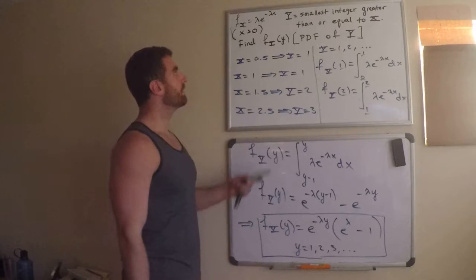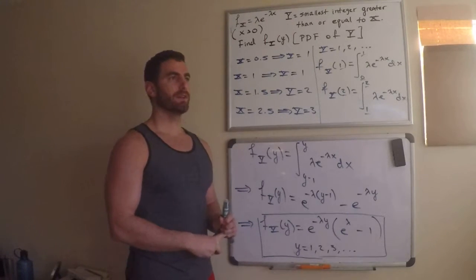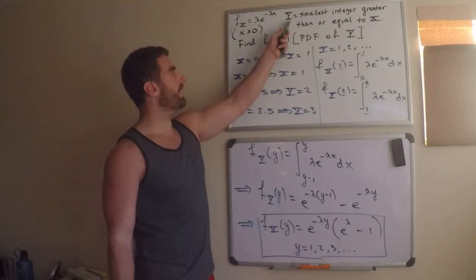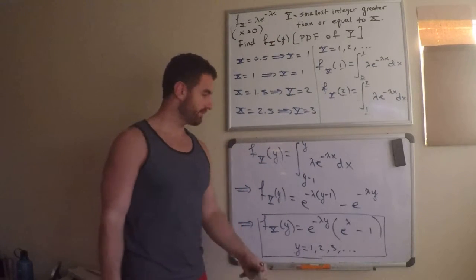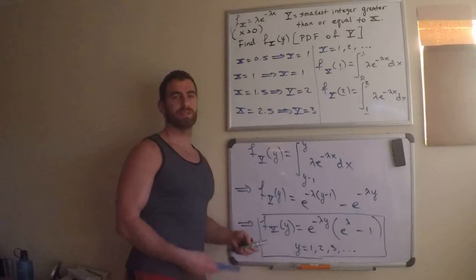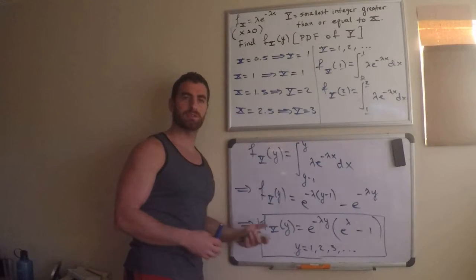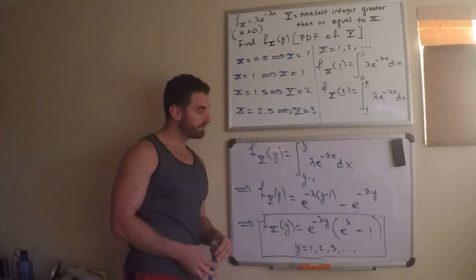So, what have we done? We're given an exponential random variable x. We're given a representation for y. It's the smallest integer greater than equal to x. From that, I can find the PDF of y. Usually, I find a CDF, take the derivative of the PDF. But I have this weird situation here. So, this is a method that I chose to take here.